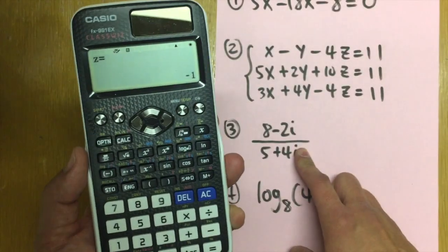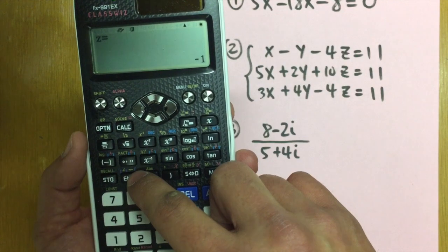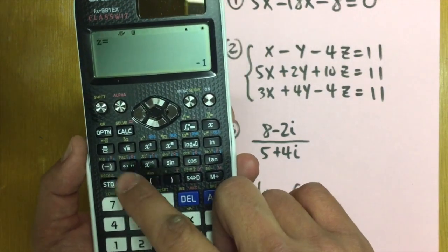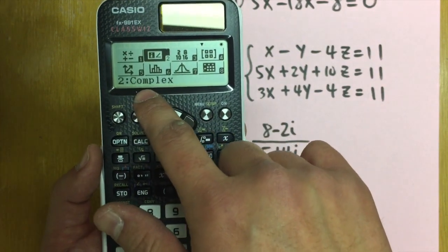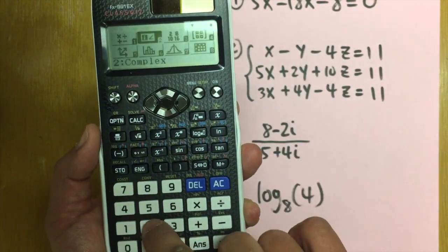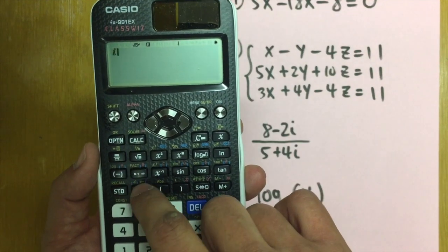Now, complex numbers. This is how we have to do it. As you can see, we have the i button here in purple. To get that, first go to the menu again. And we are going to go back up. Option two is for complex numbers. So press two right here. You have to be in the complex mode right here in order for this button to work. Alright.